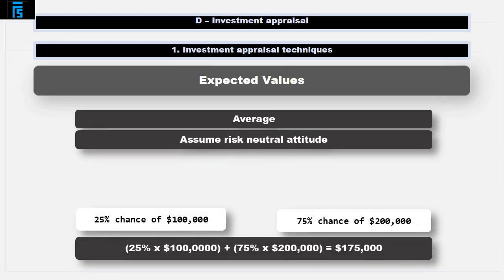If we were using expected values, we would use $175,000 as the figure for sales. This assumes a risk neutral attitude. If the decision maker uses $175,000, from that point on they are no longer considering that sales could be as high as $200,000 or as low as $100,000.